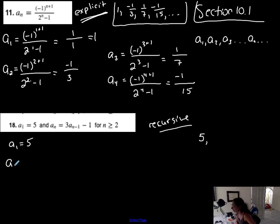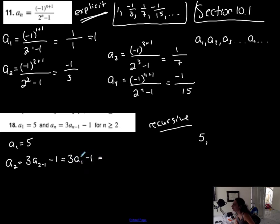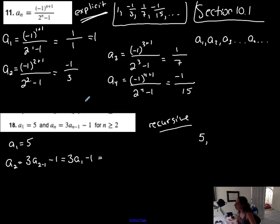How do I find the second term? I'm going to replace n with two. So: three times a subscript two minus one, minus one. Simplifying, I have three times a1 minus one. This means I need the first term multiplied by three and then subtract one in order to find the second term. The second term is dependent on what I know about the first term — if I did not know the first term, I could not find the second term. This is the recursive form. Three times a1: I was given the first term as five, so 15 minus one is 14. The second term of this particular sequence is 14.